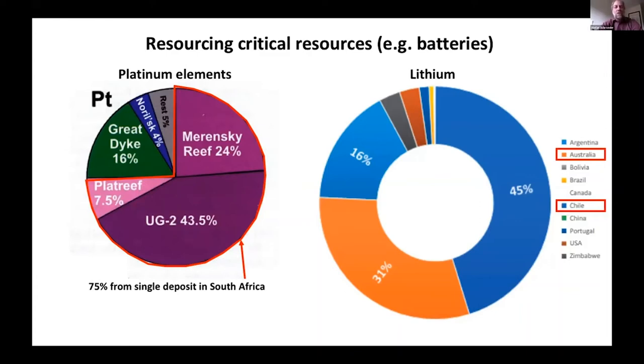At the same time, critical resources are also critical because they have a high risk of supply shortage, for example because they come only from certain countries or from certain deposits. This is illustrated as well in these two graphs on the right. Lithium, about 75 percent of the global lithium resources come from just Australia and Chile. And on the left side you have the same for platinum, which I've highlighted there in the purple colors. Again, about 75 percent of the platinum elements come from a single deposit in South Africa, illustrating the point that these are critical resources.